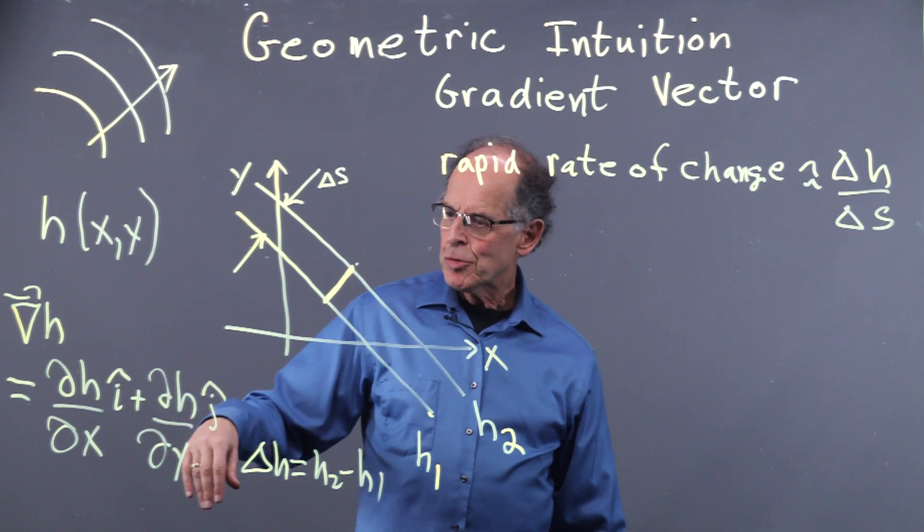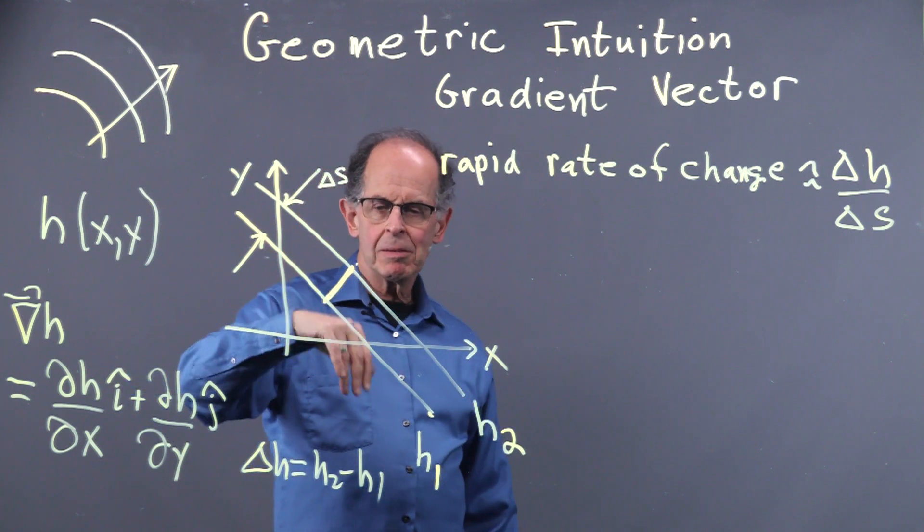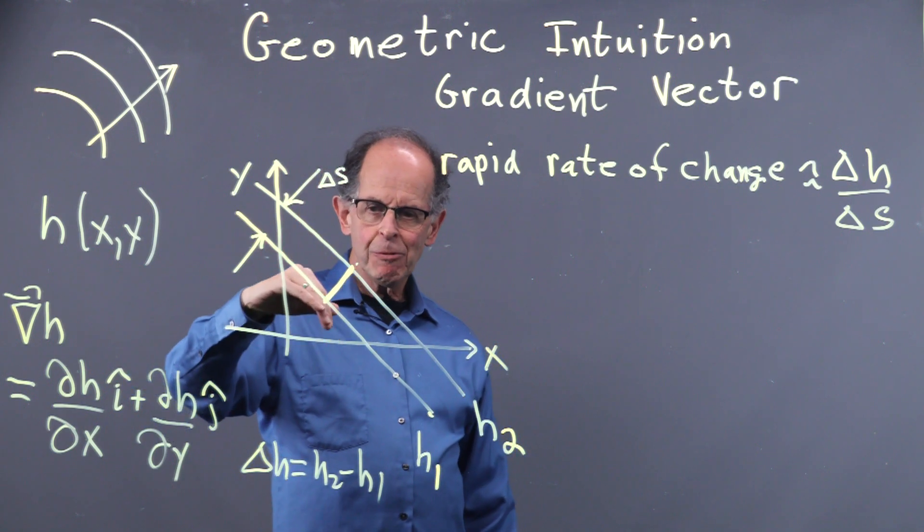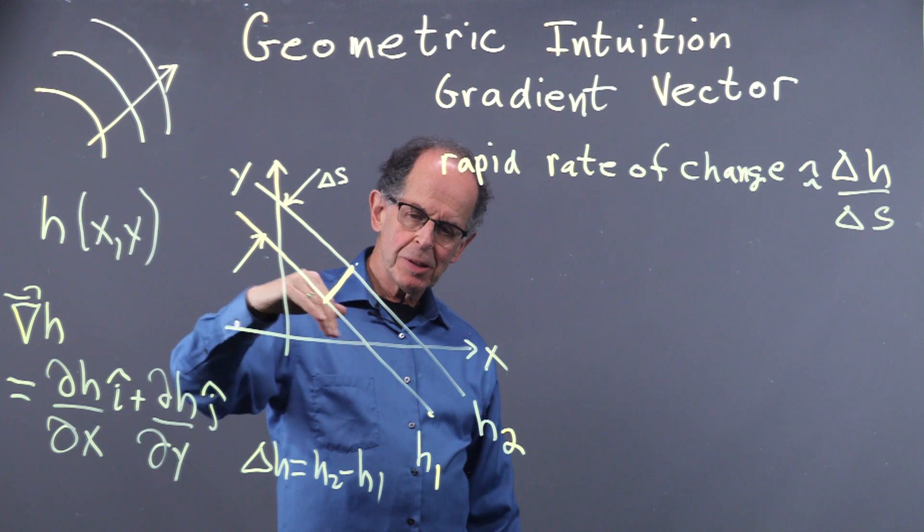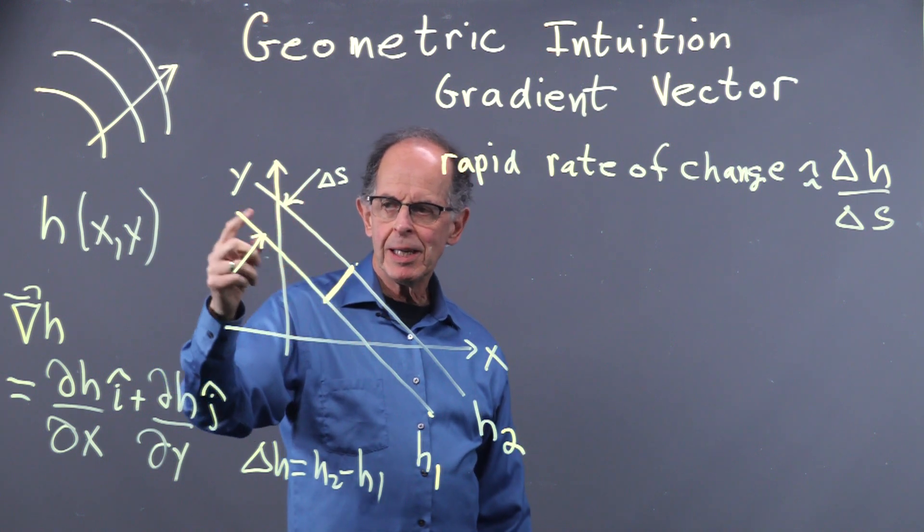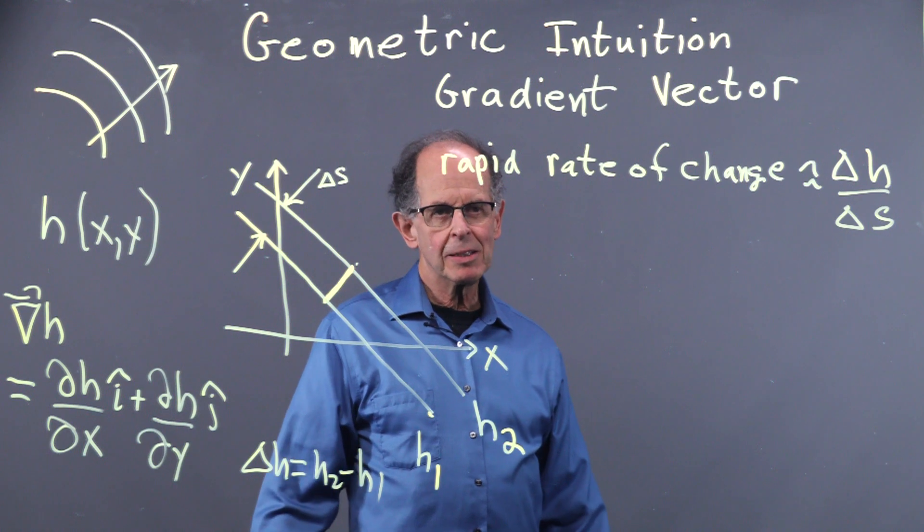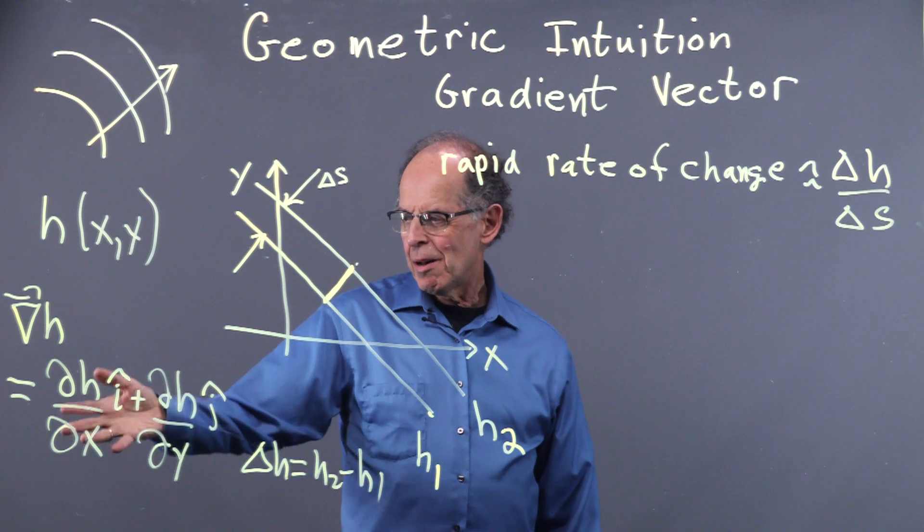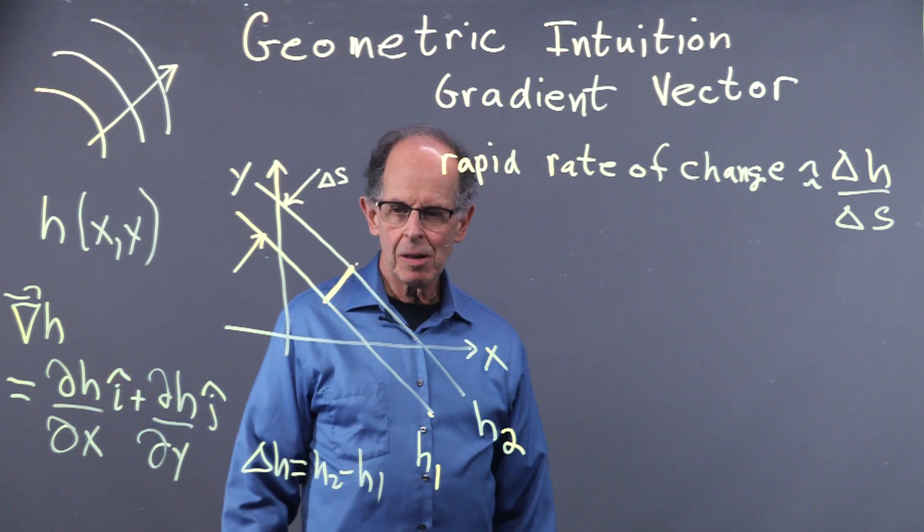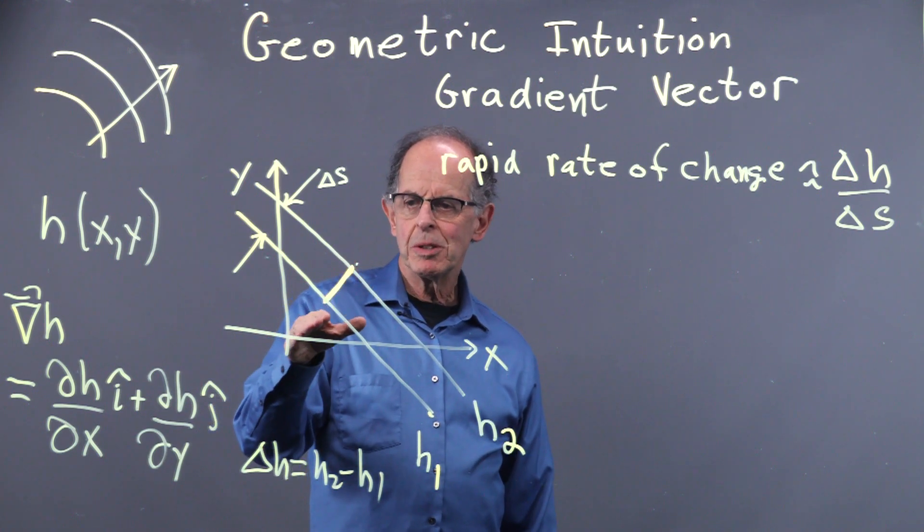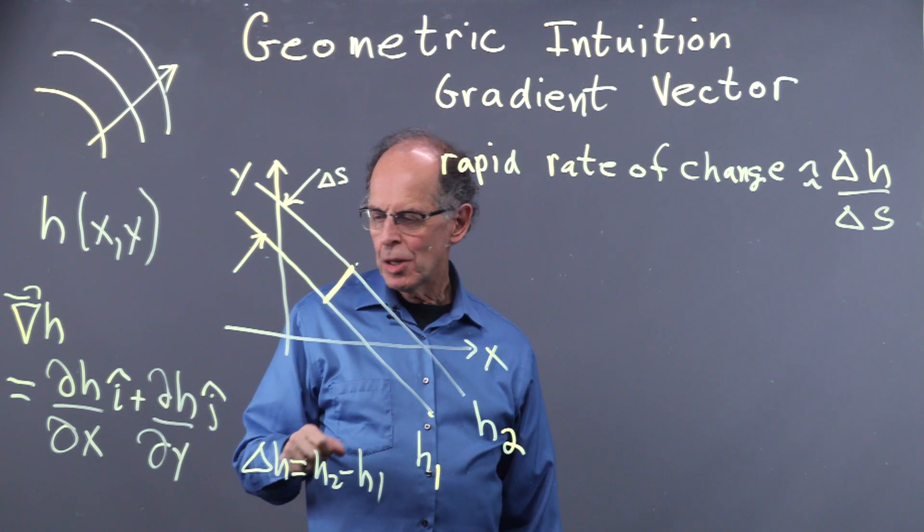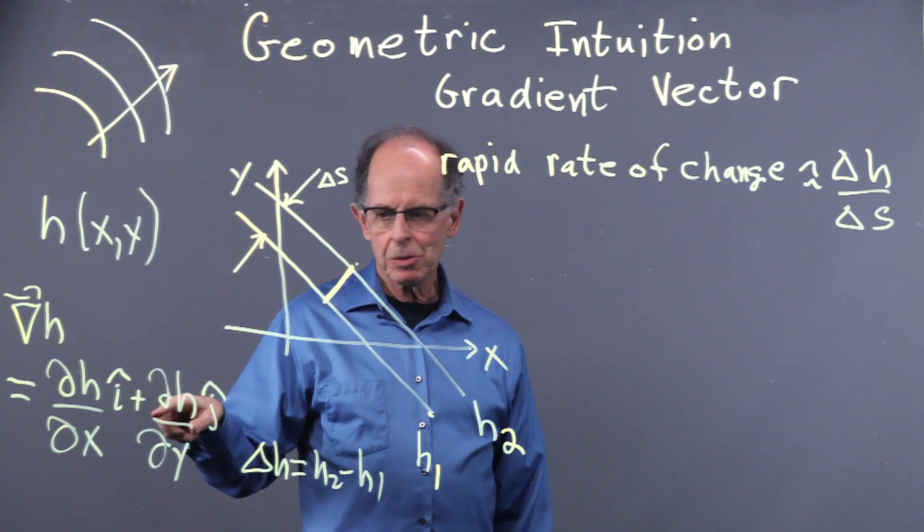So for example, when we are climbing our mountain, if we move in a direction in the XY plane corresponding to a constant height, we're not climbing at all. So my H doesn't change at all. We already have some intuition about the most rapid change. So let's look at that geometrically.